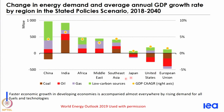In the stated policy scenario, based on existing policies of the different countries, if we look at the change in energy demand over the period 2018 to 2040 — 2018 being the base year — we can see clearly that there is a reduction in coal and oil in almost all of the European Union, the United States, and Japan.